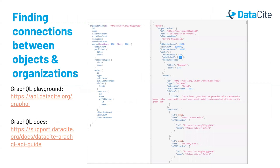Connections between objects and organizations can also be queried using the GraphQL API. Here we show an example query of the first 100 outputs that have over 100 views associated with the University of Oxford.